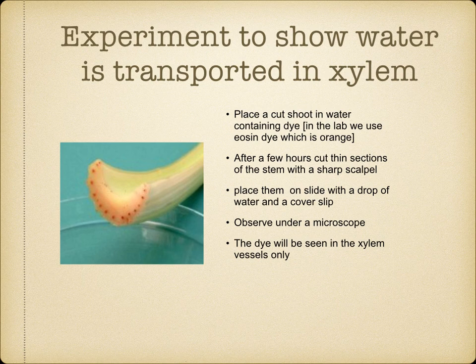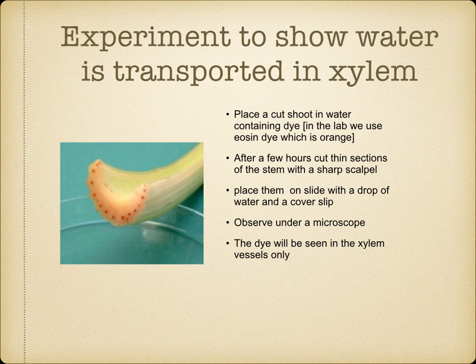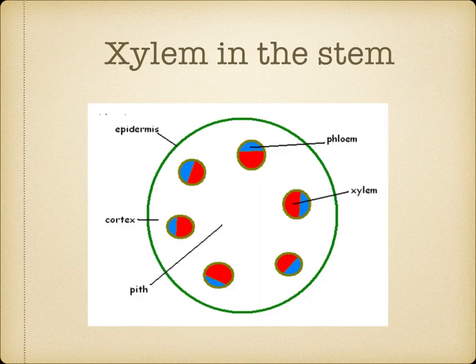In the lab, we put the celery stick into food colouring — and you can do this at home. The celery stick will suck up the food colouring, and after a few hours, if you cut through the celery, you'll notice, as shown in this picture, the little vascular bundle where the xylem is located in the stem staining whatever colour the food colouring was.